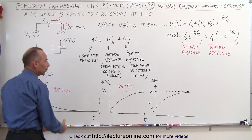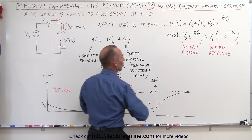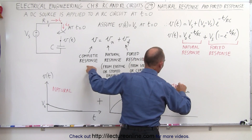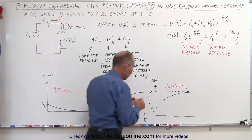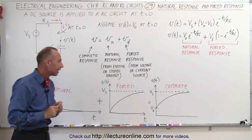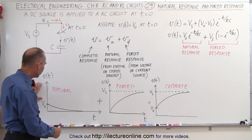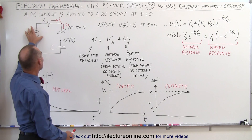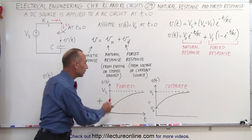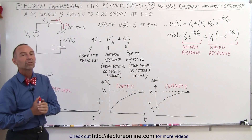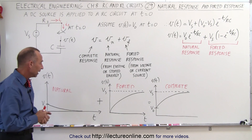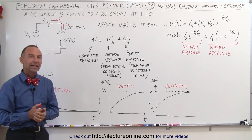When we combine the two, you get what we call the complete response of the circuit, where we add both the natural response and the forced response together. So the natural response due to the energy already on the capacitor, and the forced response due to the voltage source, together form the complete response of the circuit. That's what we mean by the natural and the forced response of a circuit.